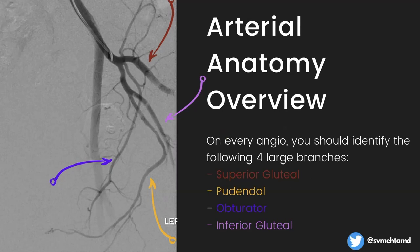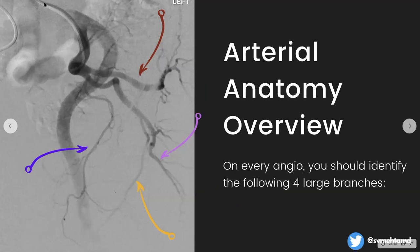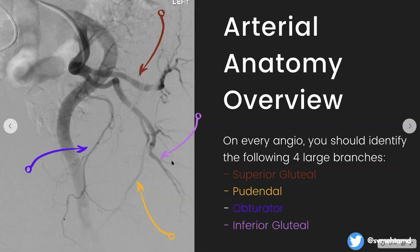Hopefully you can find the superior gluteal, pudendal (C-shaped), obturator (terminal V), and inferior gluteal on the angiogram. Take note that these are older men with atherosclerotic disease and tortuous aortas — very tortuous iliacs can take a while, unlike a straightforward UFE in a young female. So keep those four branches in mind: superior glute, pudendal C-shaped, inferior glute, obturator ending in the terminal V — for every single case.